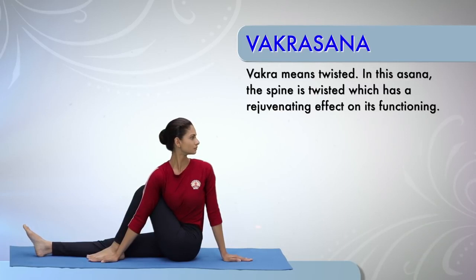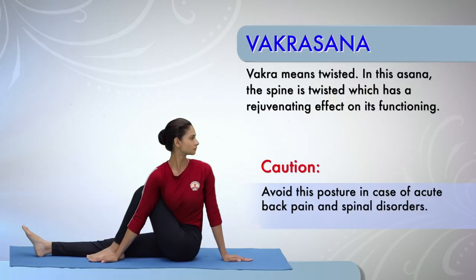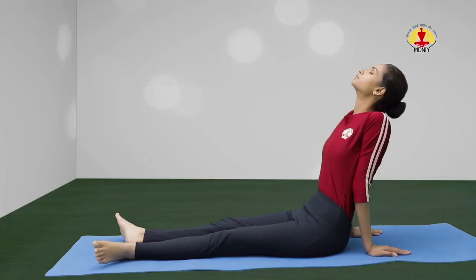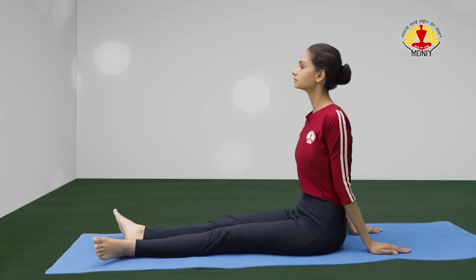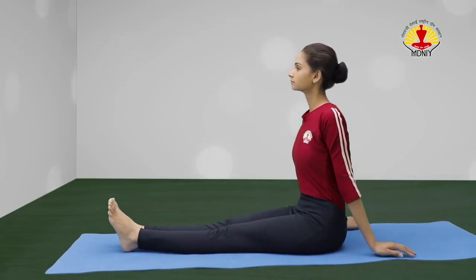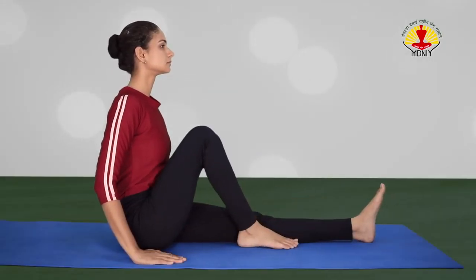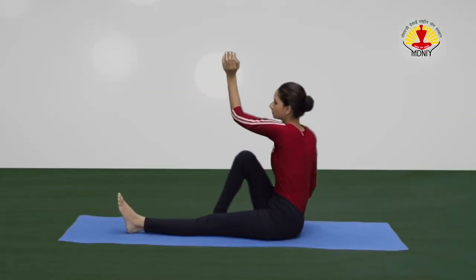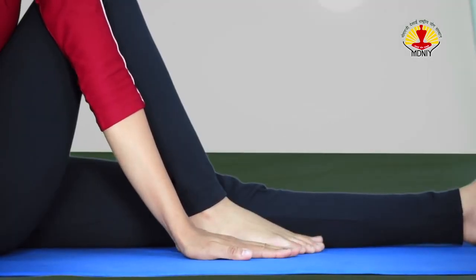Vakrasana or the Seated Twist Posture. Caution! Avoid this posture in case of acute back pain and spinal disorders. Start with long sitting posture. Sit with the back straight, legs stretched out in front. Bend the right leg and place the foot beside the left knee. Bring the left arm around the right knee and place the palm beside the right foot.